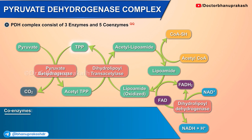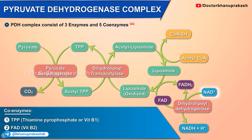The five coenzymes are: thiamine pyrophosphate (TPP) or vitamin B1, FAD or vitamin B2, NAD or vitamin B3, coenzyme A or vitamin B5, and lipoic acid.